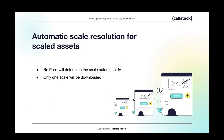One last thing about remote assets: we included automatic scale resolution for scaled assets. For example, if you have three sizes of an asset locally and convert them to remote ones, Repack will do scale resolution at runtime, check what scale the device needs, and use that URL to download only the needed asset — so we don't need to download all scales.